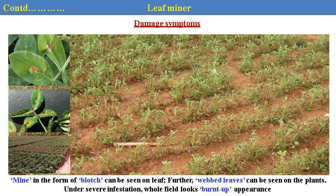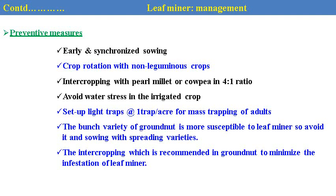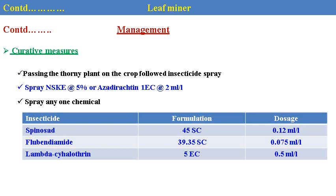Leaf miner management: early and synchronized sowing; crop rotation with non-leguminous crops; even the crop like soybean can be avoided; intercropping with cowpea at 4:1 ratio; avoid water stress condition in irrigated crop; set up light traps for different management; once type of variety groundnut is more susceptible to leaf miner, so avoid spreading of susceptible varieties; intercropping is recommended in groundnut to minimize incidence of leaf miner. Chemical management: spray NSKE at 5% and dimethoate at 2 ml per litre of water. Chemicals like spinosad, flupyradifurone, and lambda-cyhalothrin have a good mode of action against this pest and are recommended for the control of the leaf miner.